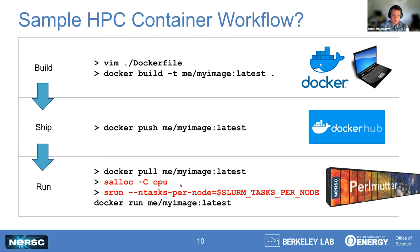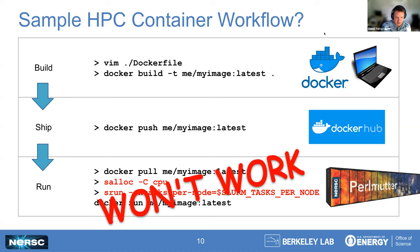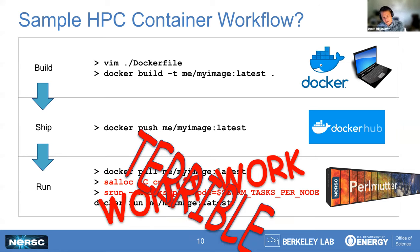What does this look like on HPC? Naively, you might build your image on your laptop, push it to Docker Hub, and then try to pull it and run it on Perlmutter — putting Docker run behind srun to launch on many tasks. But no — don't do this. Docker has security concerns on a multi-user system so we don't allow users to use it. But even if we did, it would still be a terrible idea: Docker doesn't know anything about how you want your HPC tasks to communicate, and it doesn't do anything to optimize performance for HPC.